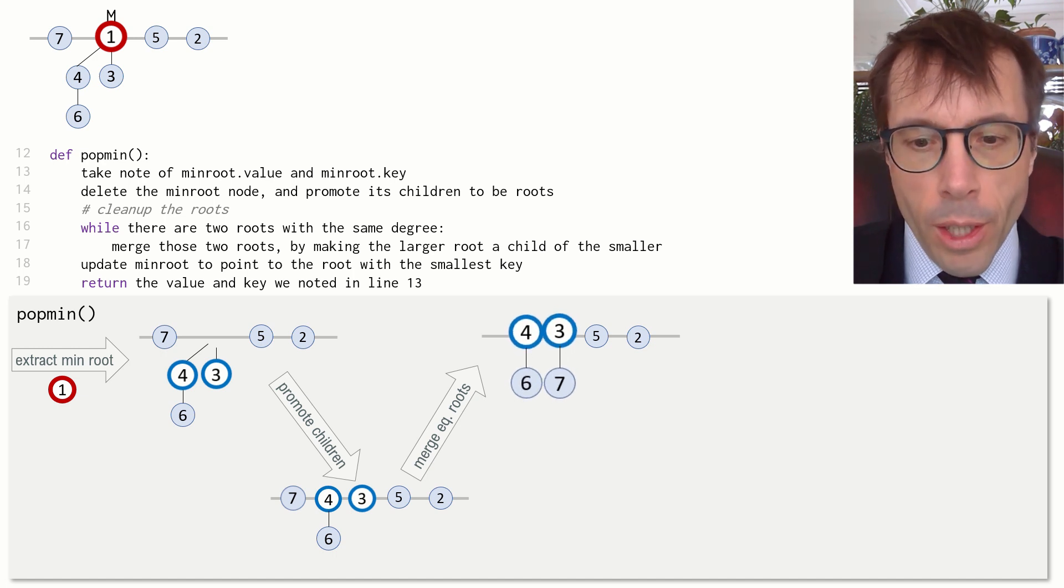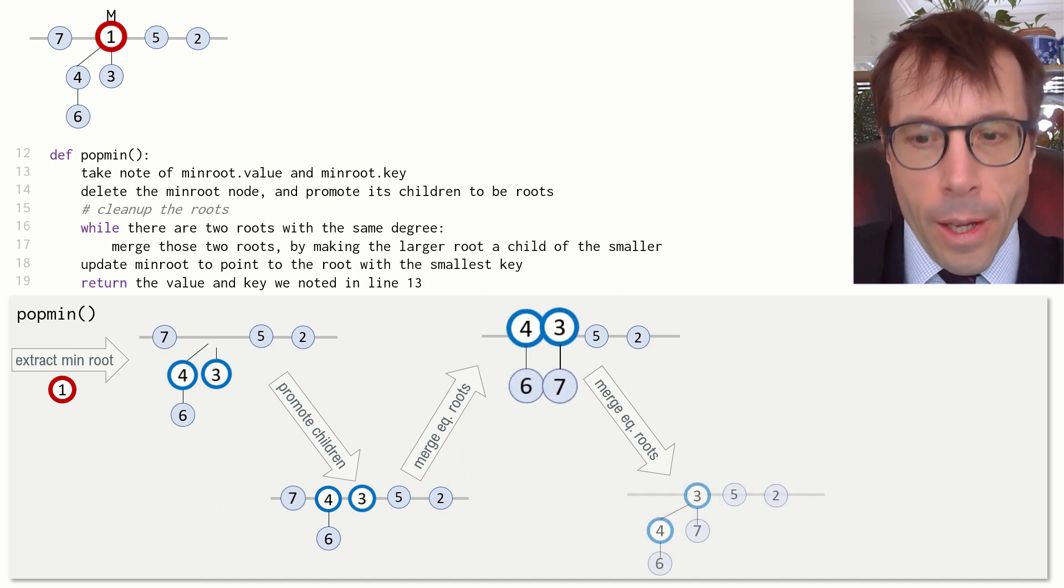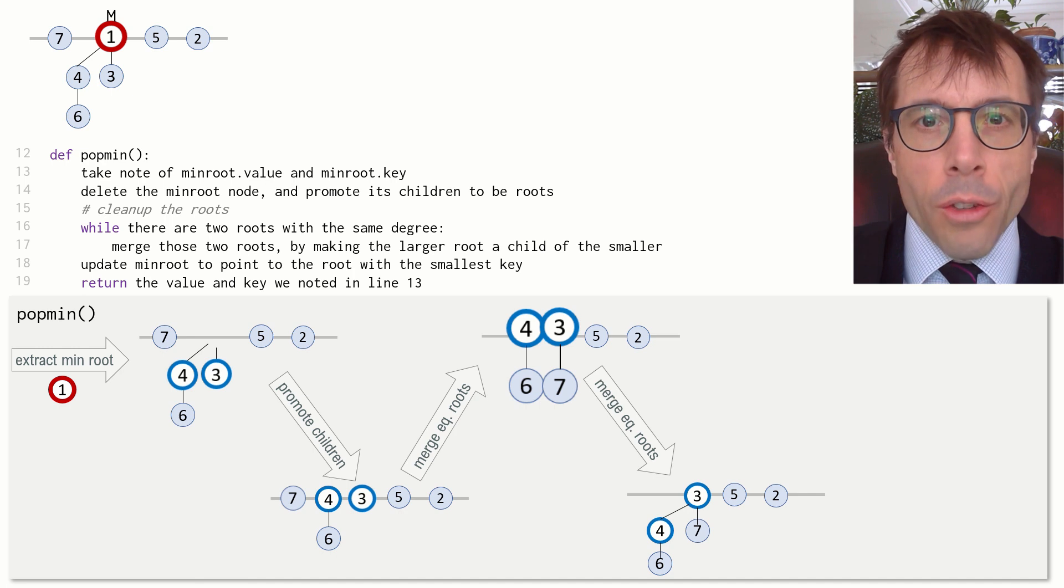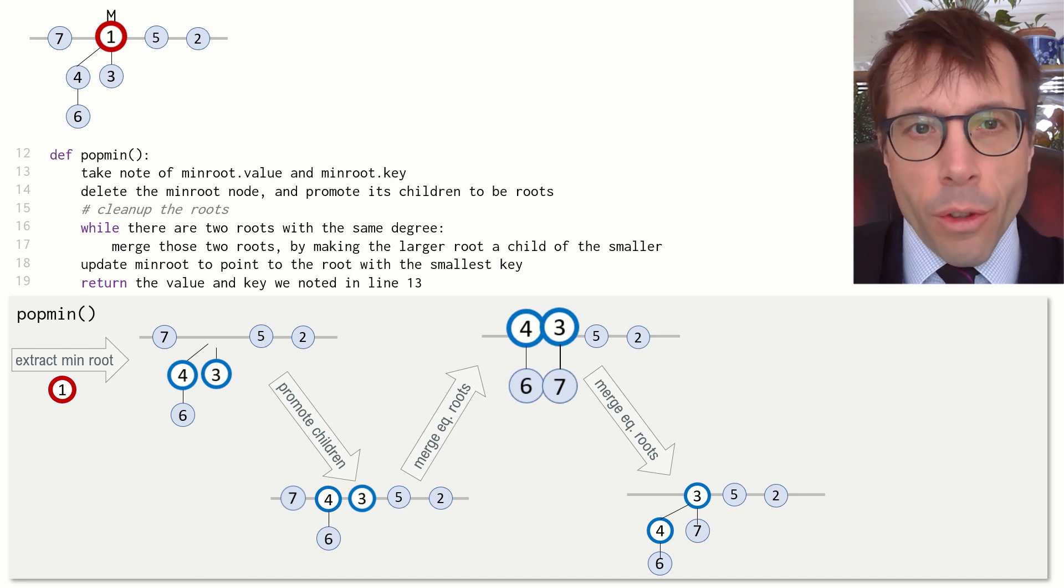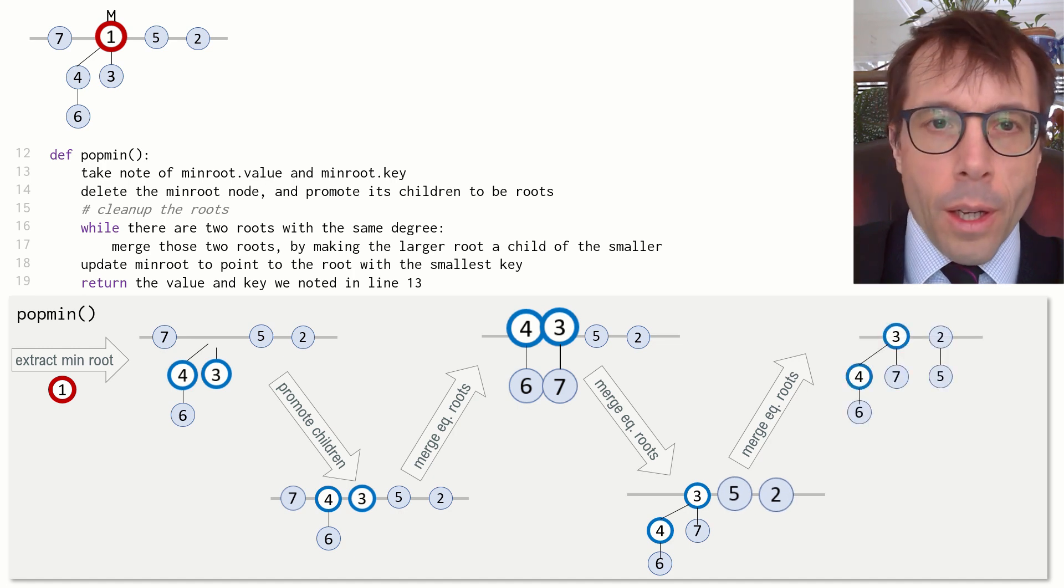Now we look again and ask, are there any roots with equal degree? Yes, there are. These two trees have roots of degree one, so let's merge them. And, as usual, we do the merging so that the heap property is preserved. We make the larger root a child of the smaller root. Still not done. There are still two trees whose roots have the same degree, so we merge them, and now we are done.